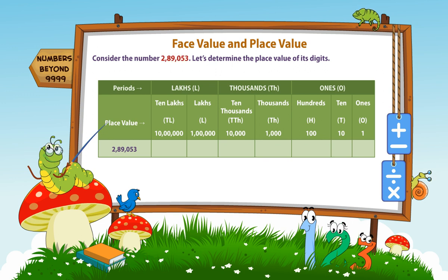Consider the number 289,053. Let's determine the place value of its digits. The place value of 2 is 2 lakhs, that is 2,00,000. The place value of 8 is 8 ten thousands,